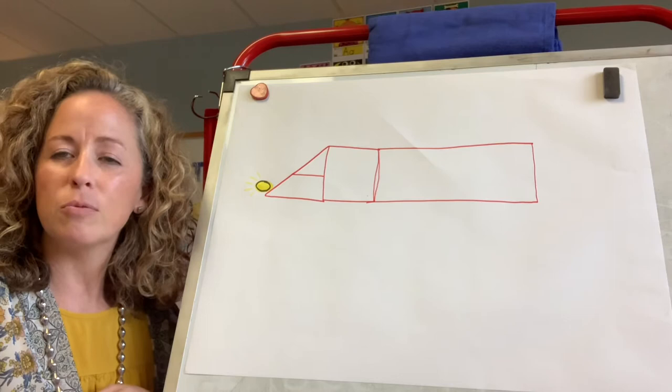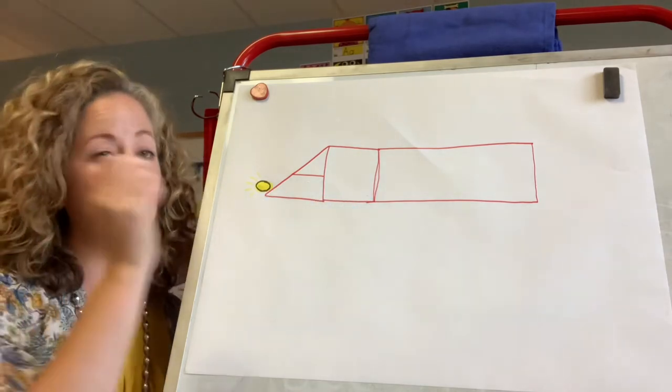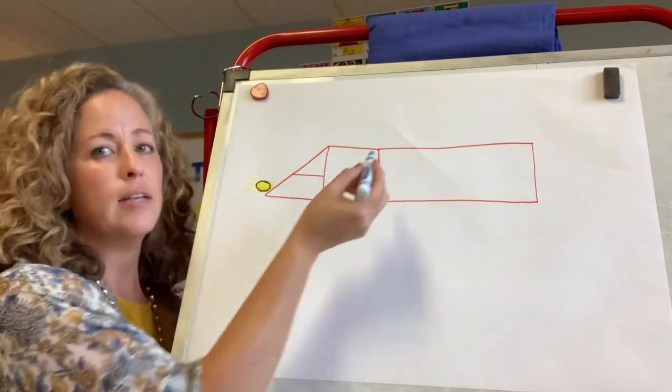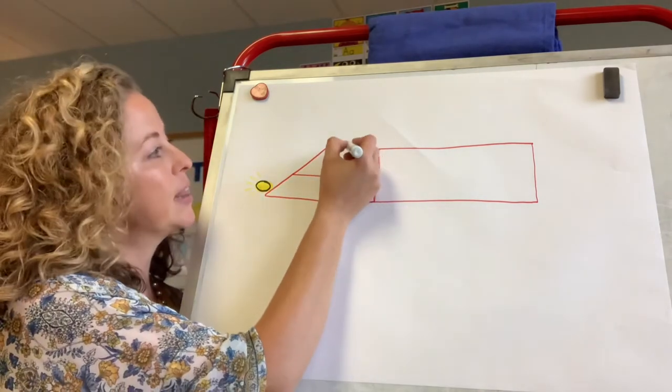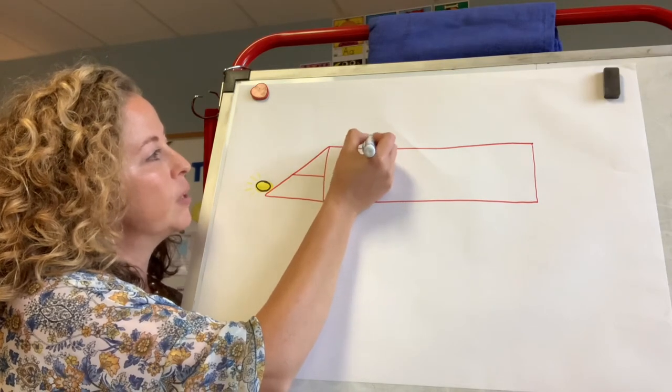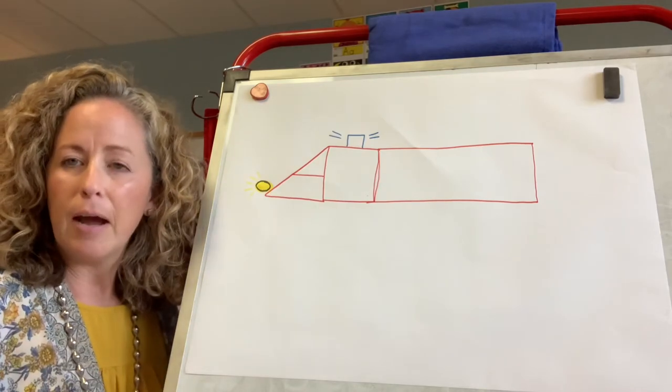Next I'm going to switch to blue, and I'm going to put a small blue circle up on top of the square. This is going to be the firetruck's light that shines when he's going to an emergency.